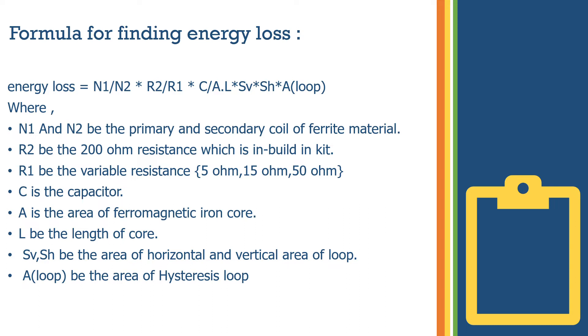R2 is the 200 ohm resistance which is inbuilt in the kit. R1 is the variable resistance. C is the capacitor. A is the area of ferromagnetic iron core, which is a constant value from the manual. L is the length of core, found by the formula 2π(d1 - d2)/r².